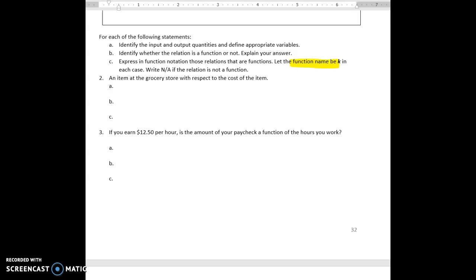So we first need to identify our inputs and outputs. Input being blue and the output being green. We're looking for the words 'is a function of' or 'with respect to.' And so here's 'with respect to.' We know that the thing that is after those words 'with respect to' is the input.